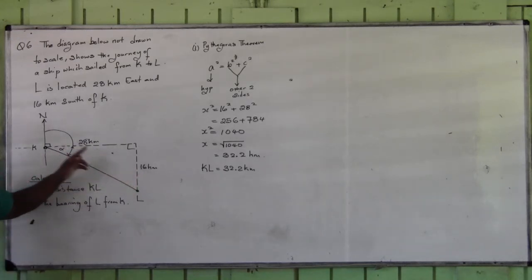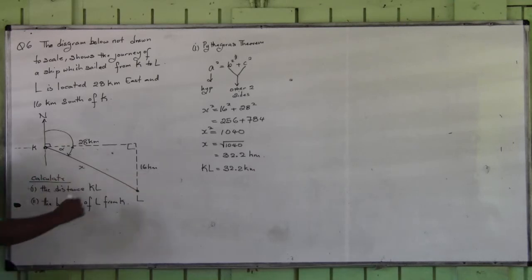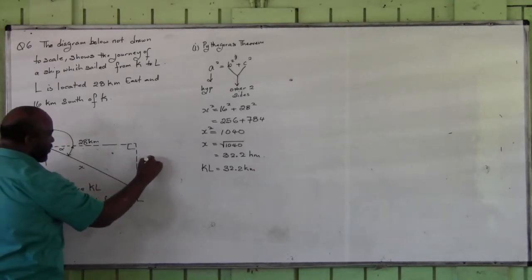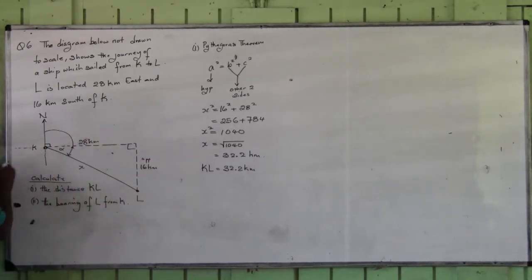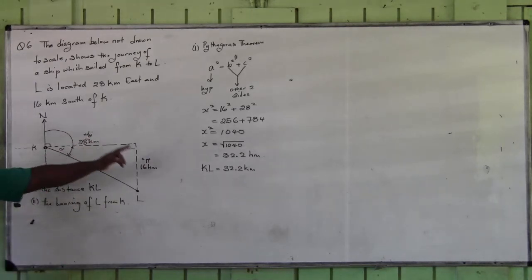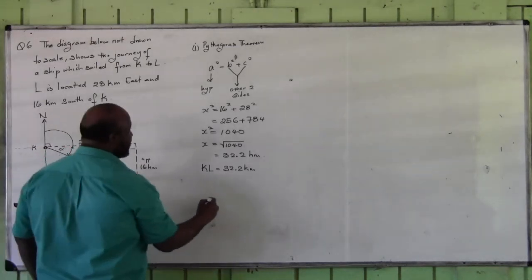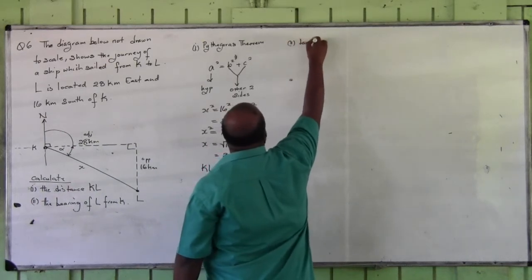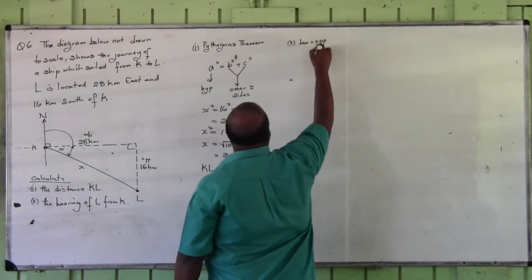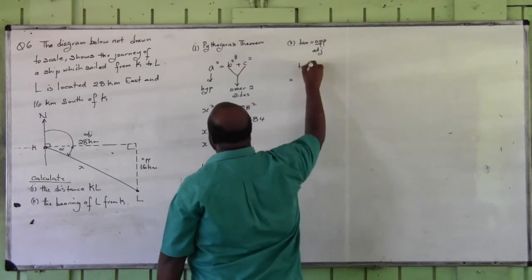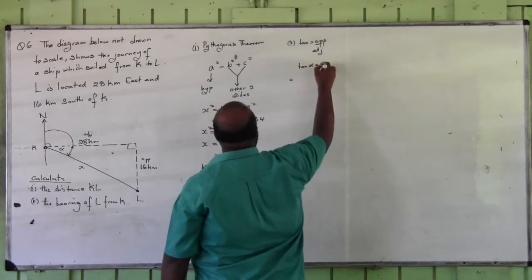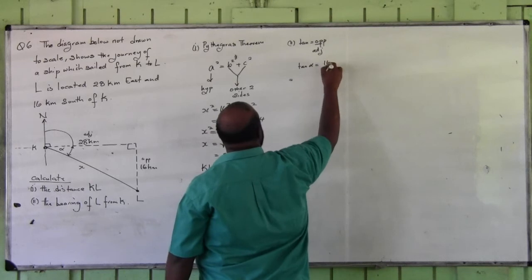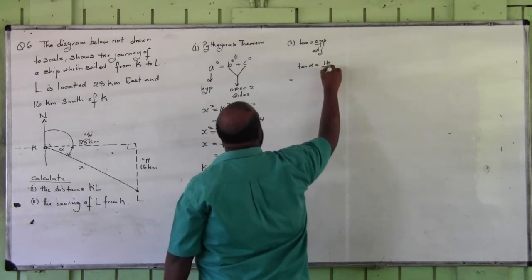What is this side to the angle? Opposite. What is this side? Adjacent. Which ratio includes opposite and adjacent? Tan. I'm going to say tan is equal to opposite over adjacent.